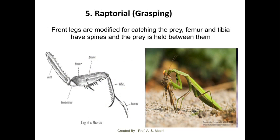The next is the raptorial type of legs. In this, the front legs of the praying mantid are modified for grasping purpose — for catching the prey. The femur and tibia have spines, and prey is held in the space between them. The femur and tibia have different spines, and with the help of these spines the praying mantid holds its prey between the front legs. Praying mantid is a predator.